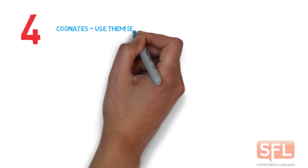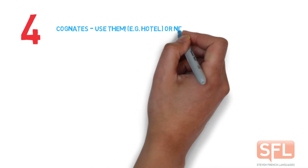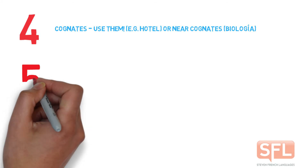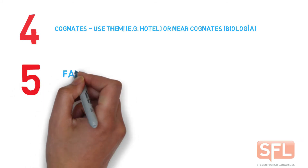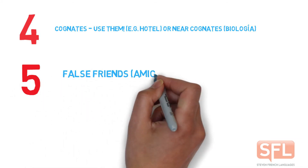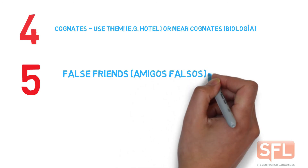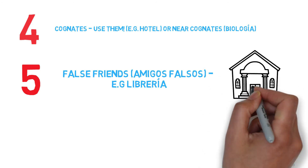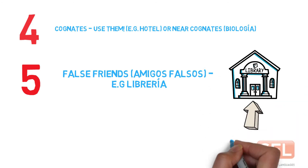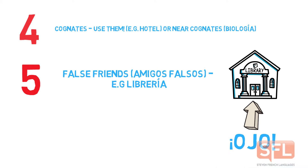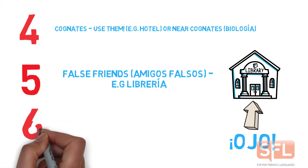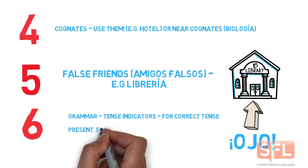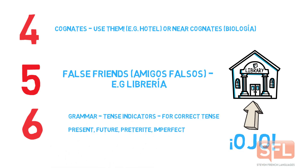Use cognates — in other words, words that look the same or nearly the same. Examples: 'hotel' or 'biología' — biology. But beware the false friend, 'amigos falsos'. For example, 'librería' looks like it means 'library', but be careful — 'ojo', as they say in Spanish — it actually means 'bookshop'.